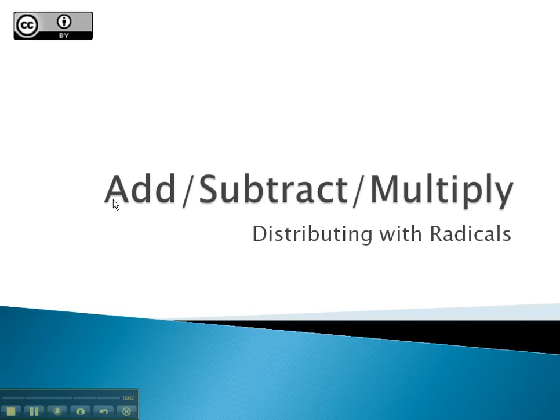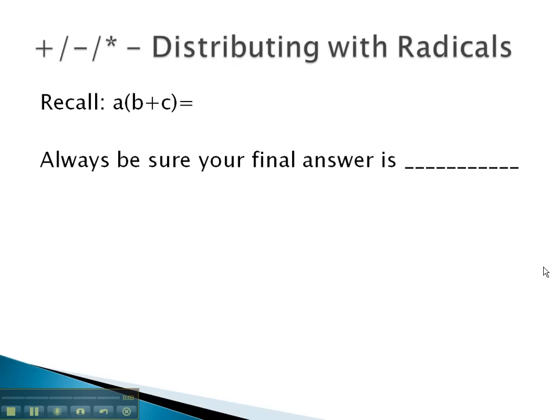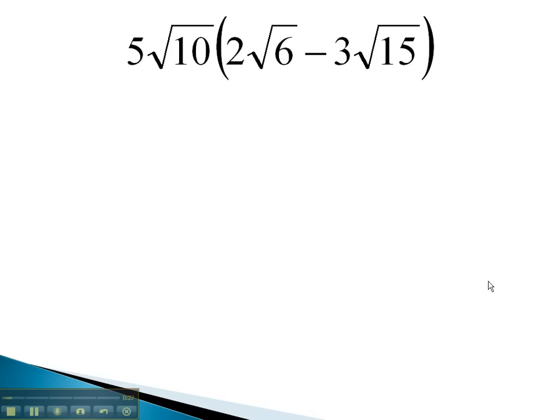In this video, we're going to take a look at how we can distribute with radical expressions. You may recall the distributive property from your previous math experience where we could multiply the number in front of parentheses to get ab plus ac. We can do the same thing with radicals as long as we make sure our final answer is reduced. Let's take a look at some examples where we do just this.